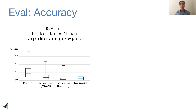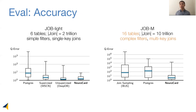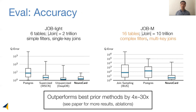We went one step further to a much more complex benchmark containing 16 tables, complex filters, and multi-key joins. On this benchmark, the two learning-based baselines cannot support it, so we include IBJS, which is a biased join sampling approach. And again, NeuroCard can achieve best-in-class accuracy. Our paper has more results and ablation studies showing that out of all factors, learning the correlations over all tables as well as performing unbiased join sampling have the biggest impact on accuracy.